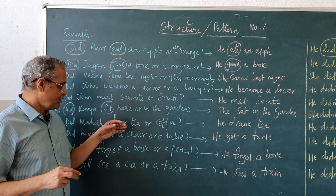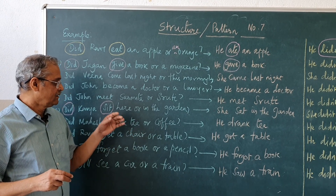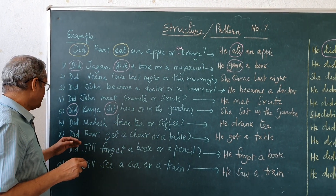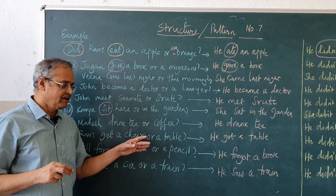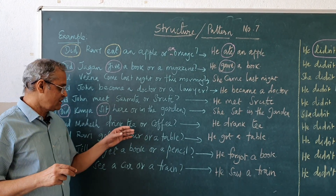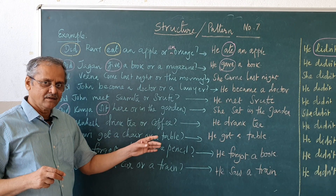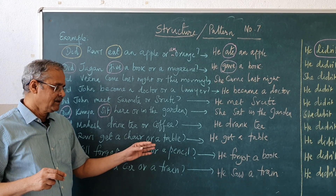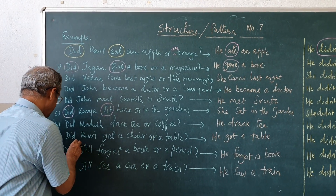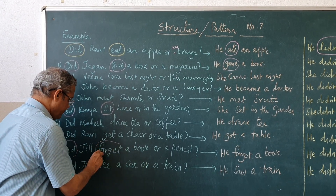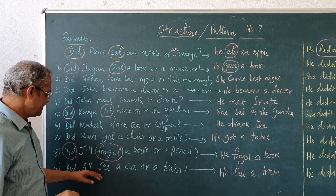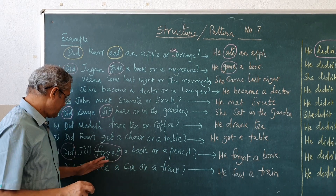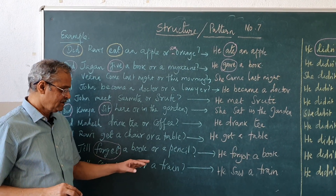Did Mahesh drink tea or coffee? He drank tea. Did Ravi get a chair or a table? He got a table. Did Jill forget a book or a pencil? He forgot a book. 'Did forget' becomes 'forgot.' Did Jill see a car or a train? He saw a train.